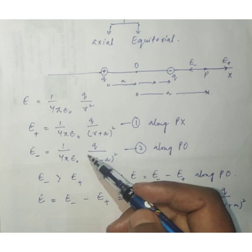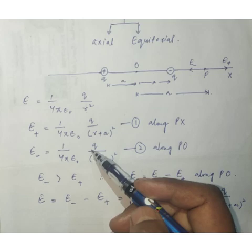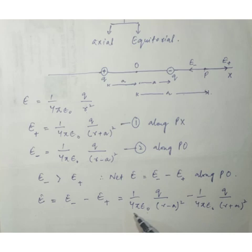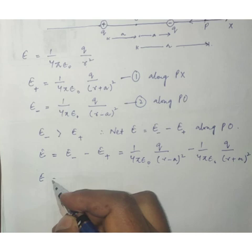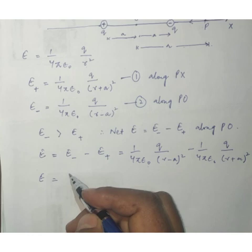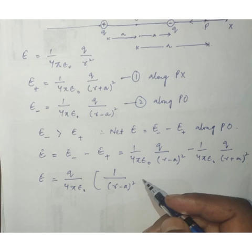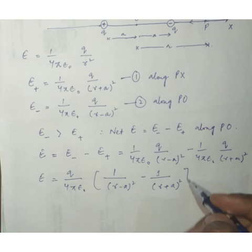Taking (1/4πε₀) × q as common, we get E = (q/4πε₀) × [1/(r − a)² − 1/(r + a)²]. Cross multiplying: the numerator becomes (r + a)² − (r − a)², and the denominator is (r − a)²(r + a)².